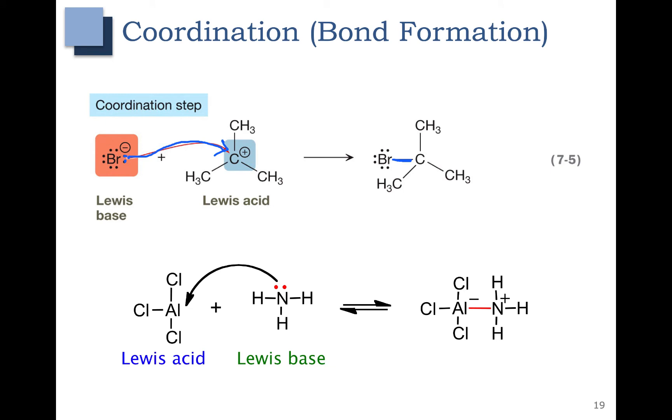Here's another example of coordination and you've seen this one before where we showed the lone pair on the Lewis base. This is our electron donor forming a bond to the aluminum. So this red lone pair becomes the aluminum nitrogen bond. Again this is known as bond formation or coordination.